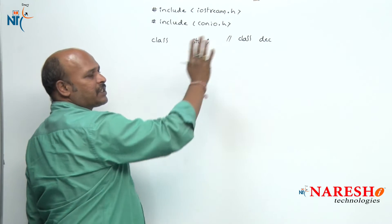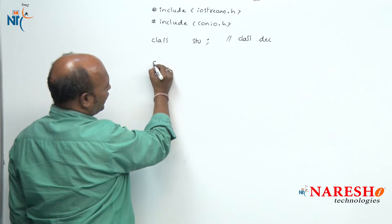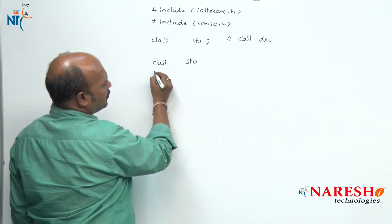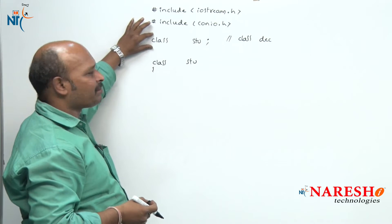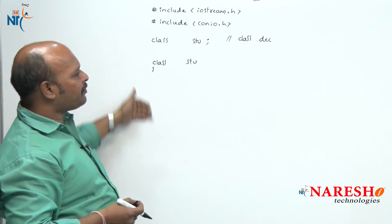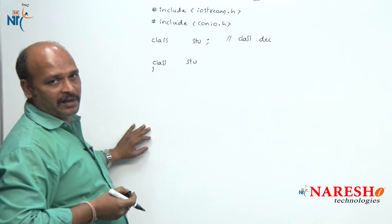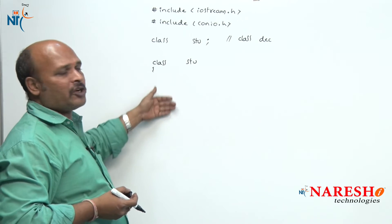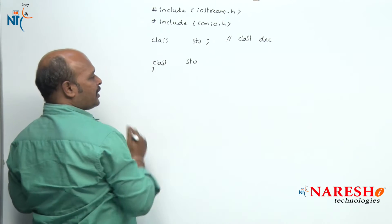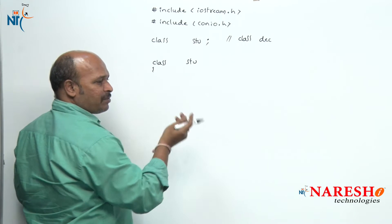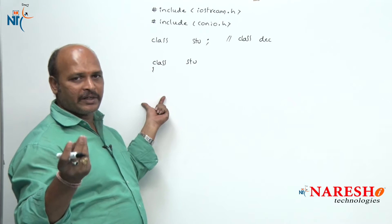Class stu is declared; now I am going to start the class body: class stu with opening bracket. The class declaration is not mandatory here because we are continuing the body immediately. If you were to continue the class somewhere else, then it would be mandatory. Next, class student — I am not going to mention private, public, or protected because the default is private.